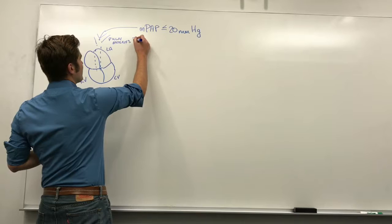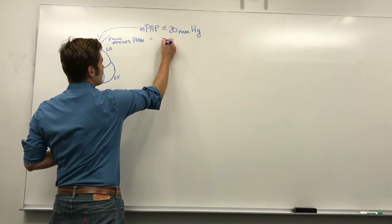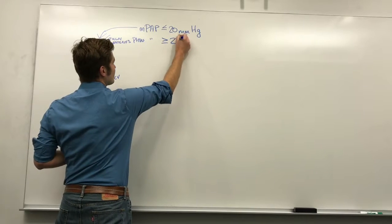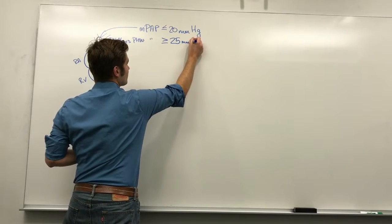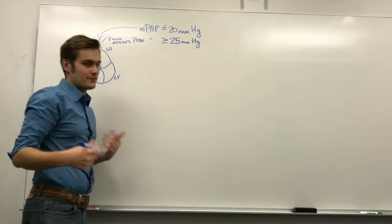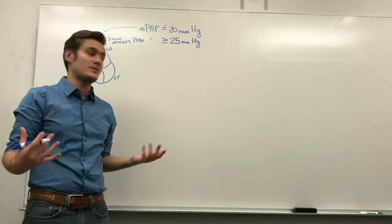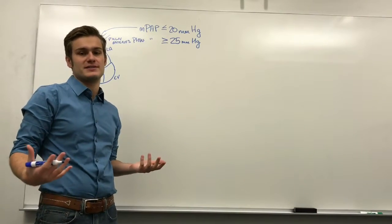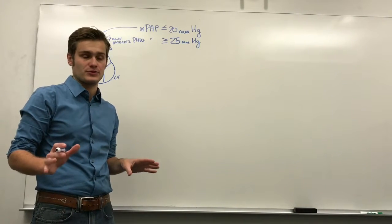So, in pulmonary hypertension, this value is greater than or equal to 25 millimeters of mercury. Now, of course, in between 20 and 25, experts don't really know what to call that. They say it might be a risk factor for developing pulmonary hypertension. So, those patients are people to watch.